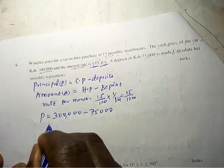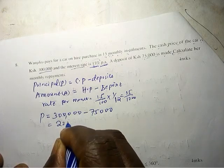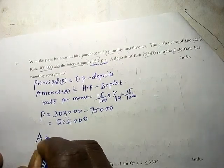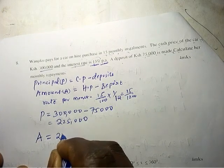That's our deposit, and our principal is going to be 225,000. So our amount is going to be principal which is 225,000.